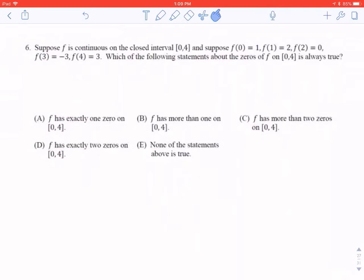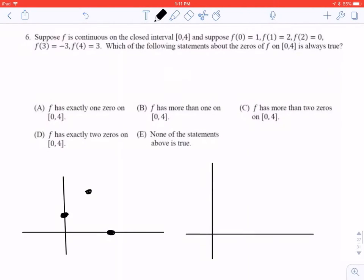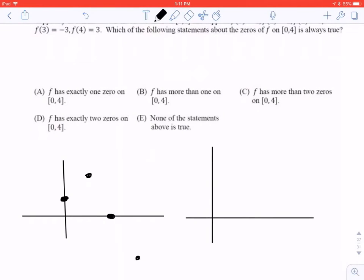Number 6. Suppose f is continuous on the closed interval from 0 to 4. I'm just going to draw something real quick. An x and y coordinate plane. I'm going to do this twice because I've done the problem before. So it's continuous on the closed interval from 0 to 4. I'm thinking of an intermediate value of theorem again since it mentioned closed interval. Suppose f of 0 is 1. So I'm going to put that here. And f of 1 is 2. I'm going to put that here. f of 2 is 0. I'm going to put that here. f of 3 is negative 3. I'm going to put that down here. f of 4 is positive 3. I'm going to put that up here somewhere. Picture is not to scale.